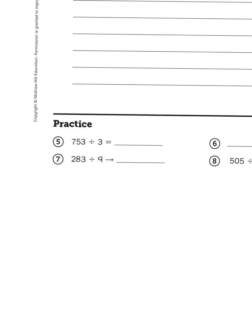753 divided by 3. How should I solve this problem? Why don't I take the partial quotients approach just for fun. With partial quotients, I'm going to think how many groups of 3 can I get out of 753? I'm thinking in hundreds right now. Can I get 100 groups of 3?